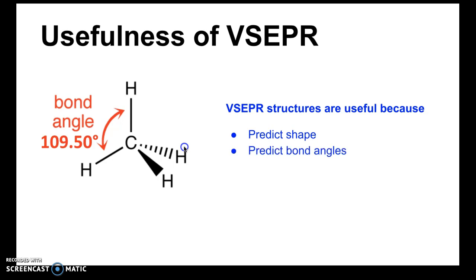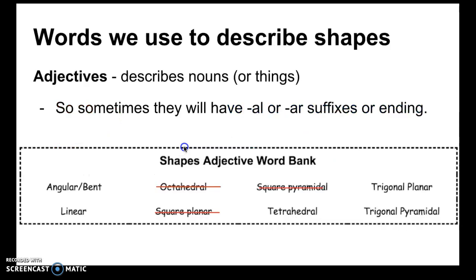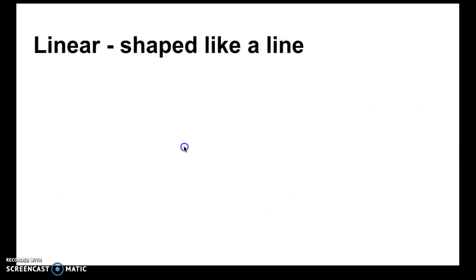So what exactly are these shapes that we refer to in VSEPR structures? There are several shapes that we have to know in this course. There are of course many more shapes that we don't address, but here are the main ones that are presented here. All of these shapes are adjectives, so they describe nouns, and as a result they'll have certain suffixes like AL or AR sometimes because they're adjectives. However, the root words does imply the shape that we see in the VSEPR structures. So let's take a look at some of these terms and structures that match those terms.